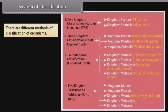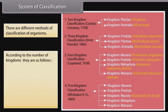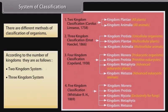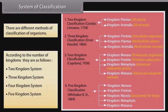There are different methods of classification of organisms. According to the number of kingdoms, they are as follows: two kingdom system, three kingdom system, four kingdom system, five kingdom system, and six kingdom system.